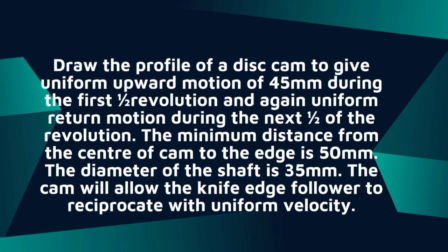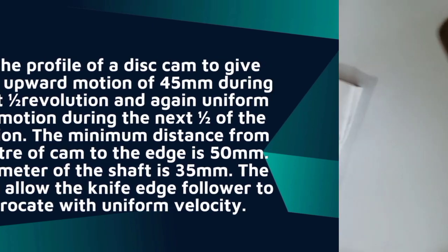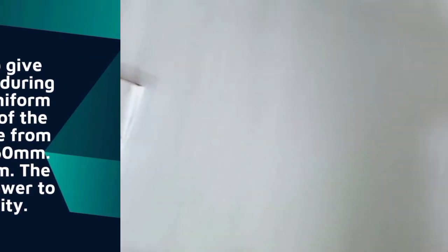Draw the profile of a disc cam to give uniform upward motion of 45 mm during the first half revolution, and again uniform return motion during the next half of the revolution. The minimum distance from the center of the cam to the edge is 50 mm, the diameter of the shaft is 35 mm, and the cam will allow the knife edge follower to reciprocate with uniform velocity.